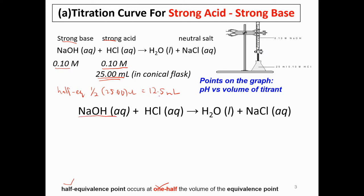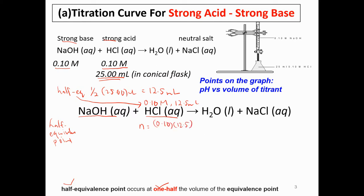Now, how much NaOH is needed to reach the half-equivalence point? Let's convert to moles for easier calculation. We calculate for acid first — the acid is 0.1 molar, and at the half-equivalence point the volume is 12.5 ml. So the moles at half-equivalence point will be MV over 1000, giving us 0.00125 mol.